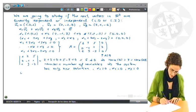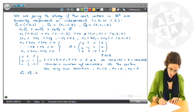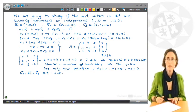So when this occurs, the conclusion is that the 3 vectors U1, U2, and U3 are linearly independent.